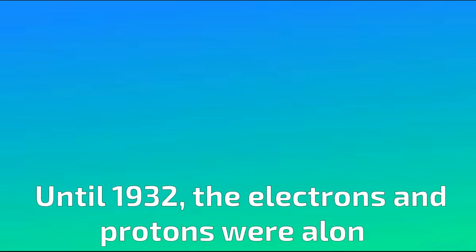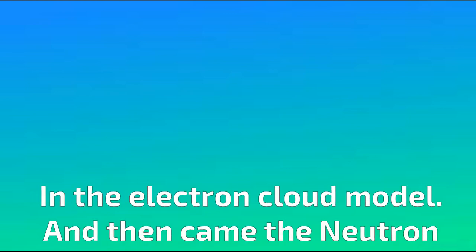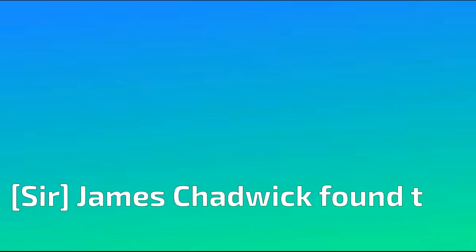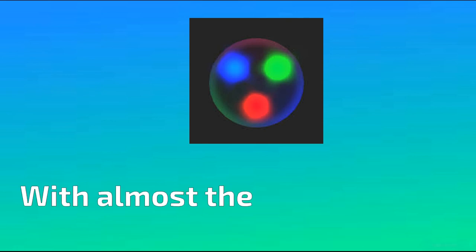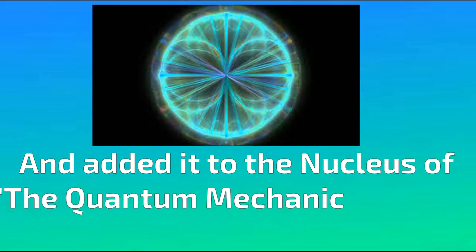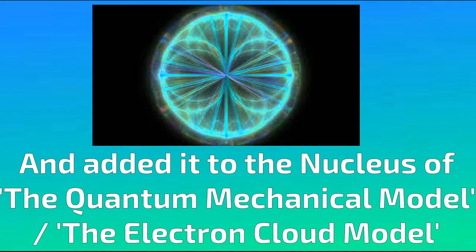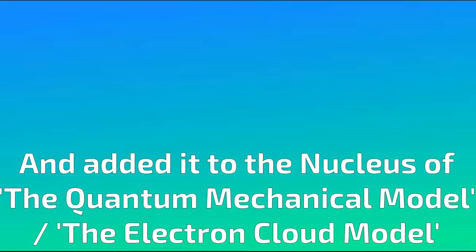Until 1932, the electrons and protons were alone in the electron cloud model, and then came the neutron. James Chadwick found that the proton is not all of the mass in the atom's nucleus, and that there was a particle with neutral charge in the nucleus with almost the same mass as a proton. And looking for this, he found the neutron, and added it to the nucleus of the quantum mechanical model slash electron cloud model.